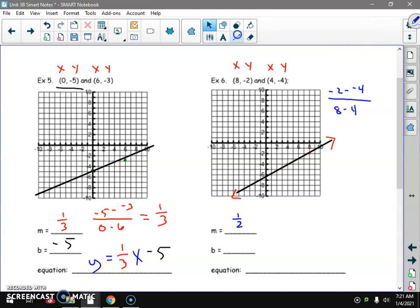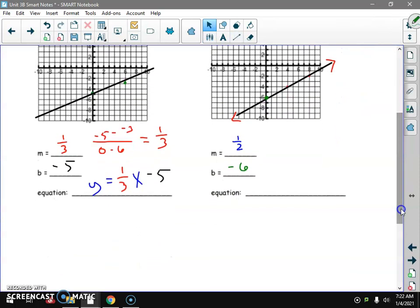The B, again, it's the Y intercept. Where does that line cross the Y axis? Right there at negative 6. The equation: Y equals 1 half X minus 6. Alright.